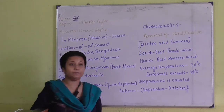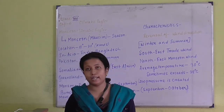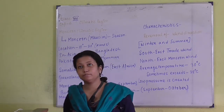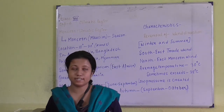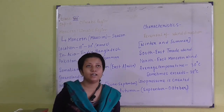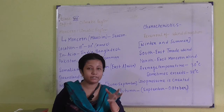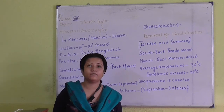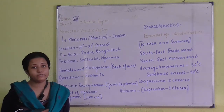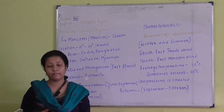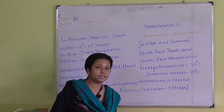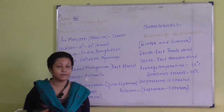The word monsoon implies 'mosim', which means season. It is called seasonal because it has a different pattern and it changes or flows from different directions in different parts of the year during the summer and winter months. The location of this type of climate is from 10 to 30 degree north and south latitudes in both the hemispheres.